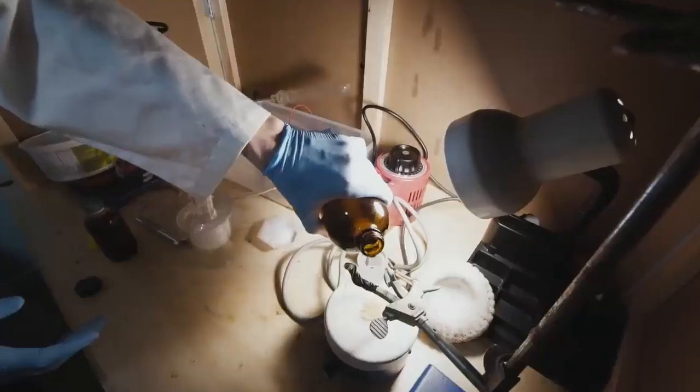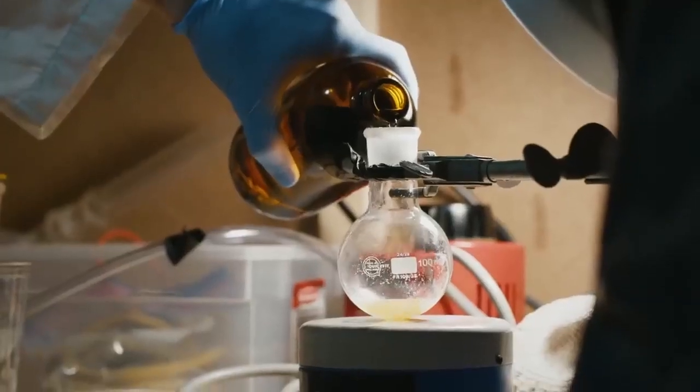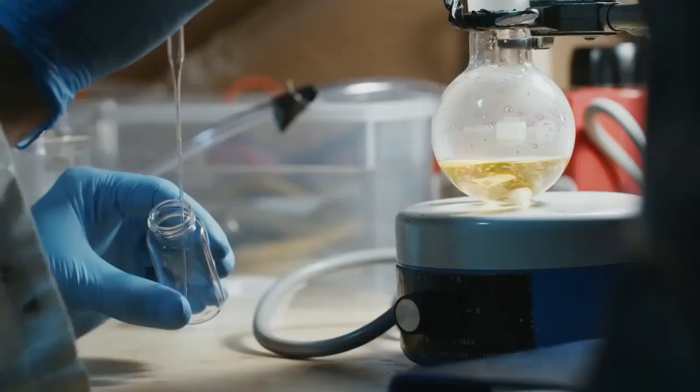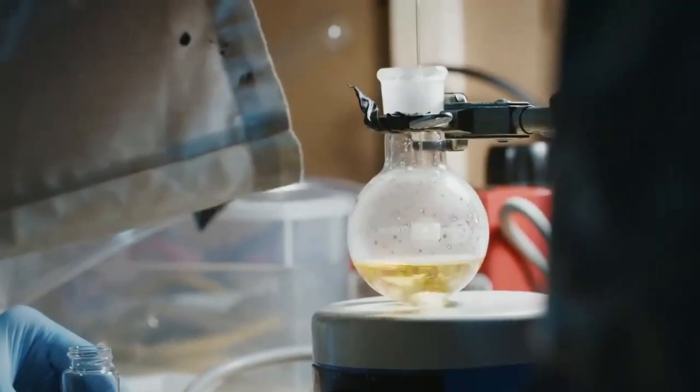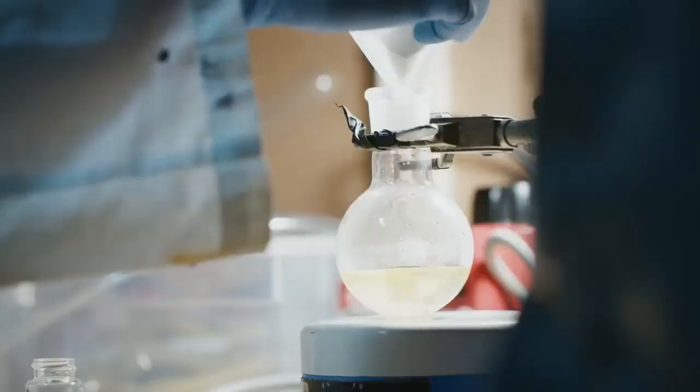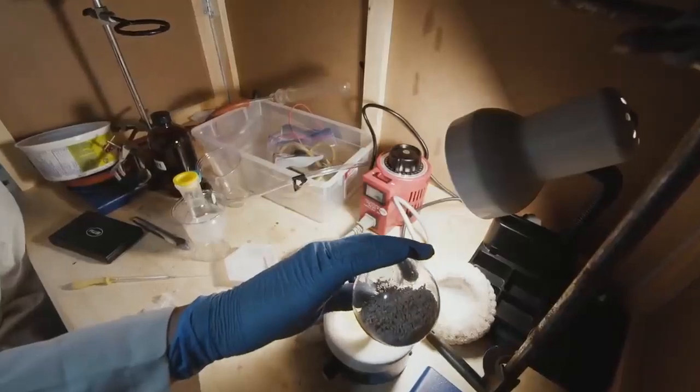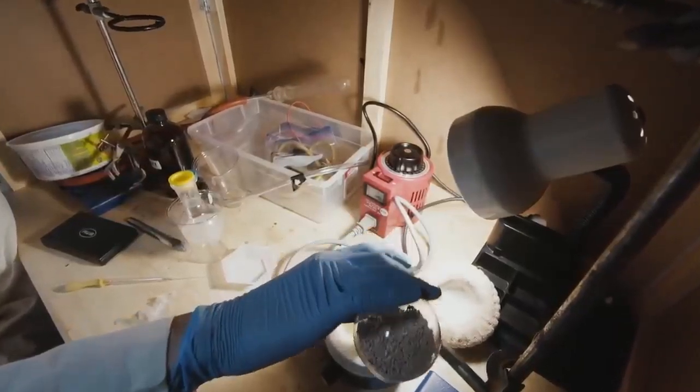In a separate round-bottom flask, tryptamine is dissolved in DCE with brief microwave radiation, followed by two molar equivalents of triethylammonium, three molar equivalents of the formaldehyde sodium bisulfite adduct, four molar equivalents of sodium triacetoxy borohydride, and a dash of four angstrom molecular sieves.